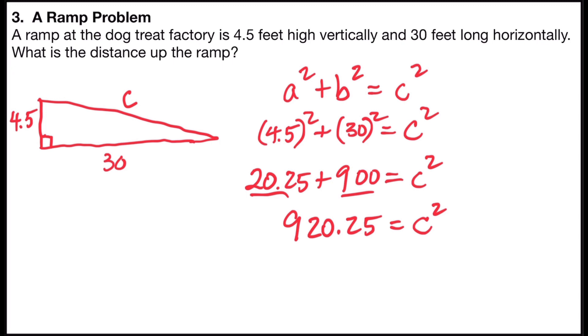So to solve for C, which is the hypotenuse or the distance up the ramp, I'm going to take the square root on both sides.